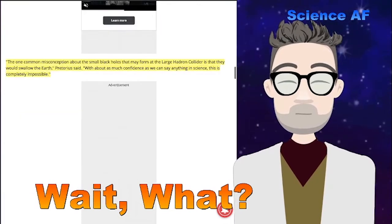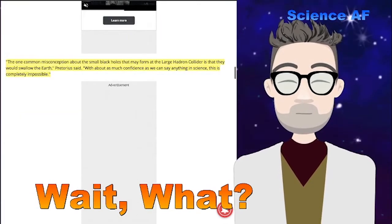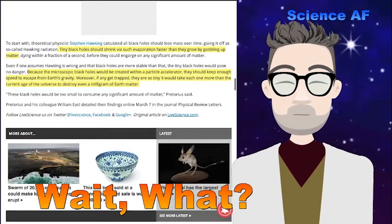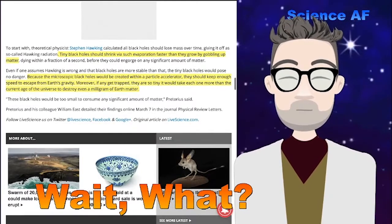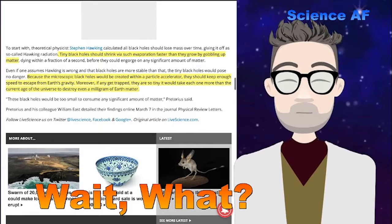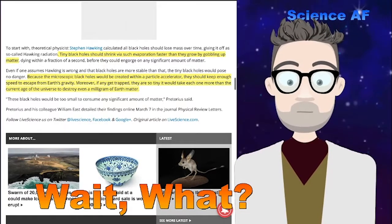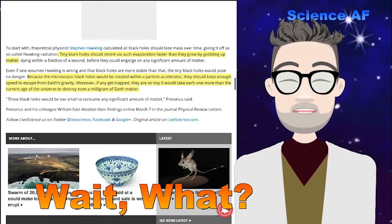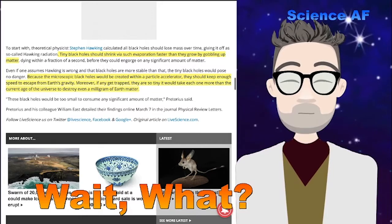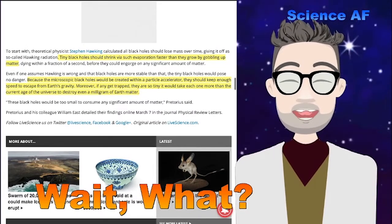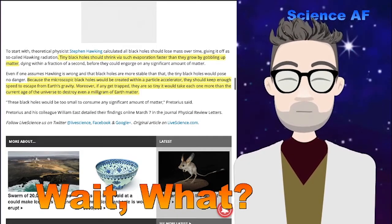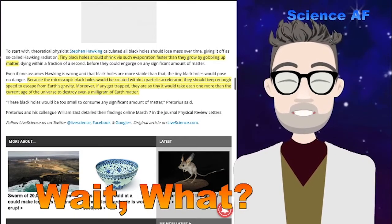So this article is saying for 2013 that it's actually theoretically much easier than we once thought to create a black hole from two tiny particles colliding. All you need is a certain density. When you get to a very high density, even if it's a very tiny amount of matter, it could become a black hole. But, notably, one common misconception about small black holes is that they would swallow the Earth. With as much confidence as we can say anything in science, this is impossible.